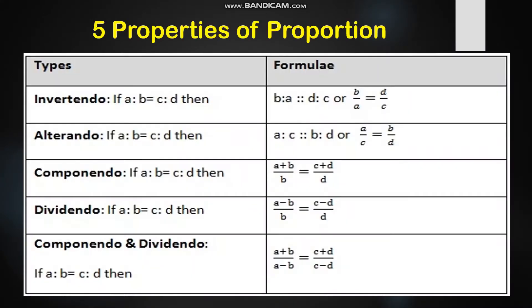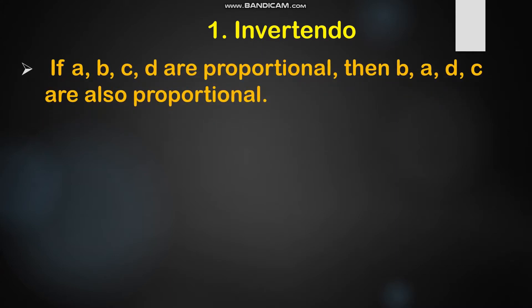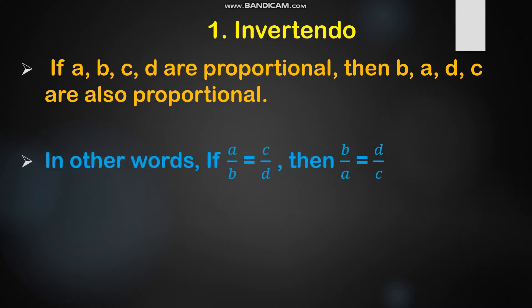These are the five properties of proportion: invertendo, alternendo, componendo, dividendo, and componendo-dividendo. The first property is invertendo. If A, B, C, D are proportional, then B, A, D, C are also proportional. In other words, if A ratio B is proportional to C ratio D, then B ratio A is proportional to D ratio C. Here, the numerator becomes the denominator and the denominator becomes the numerator.